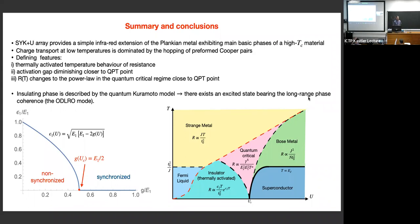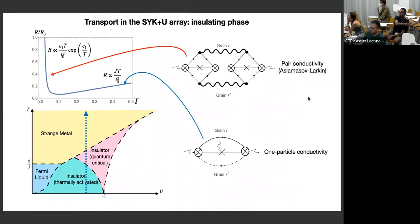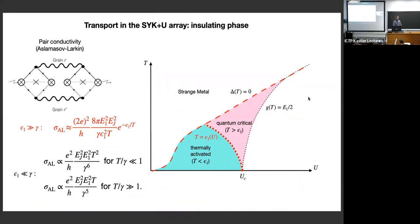A question is raised about whether the calculation can be repeated replacing T_ij with a factor including a magnetic field to model a field-tuned superconductor. The answer is yes, it can be done — there are some preliminary results but the work is in progress.